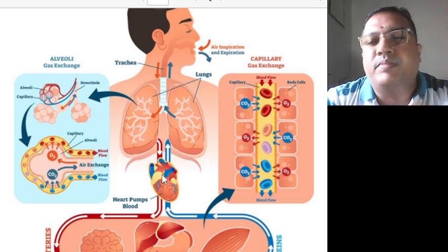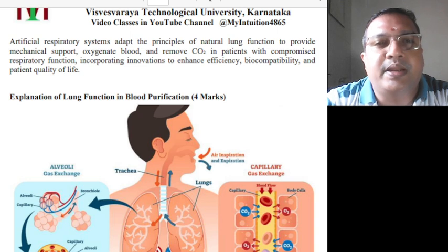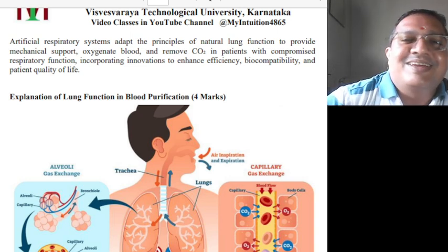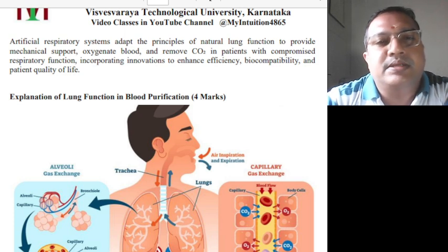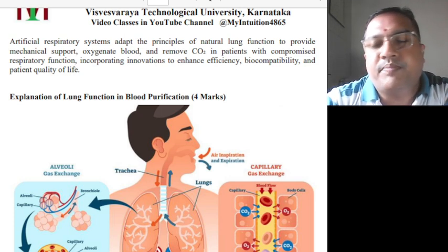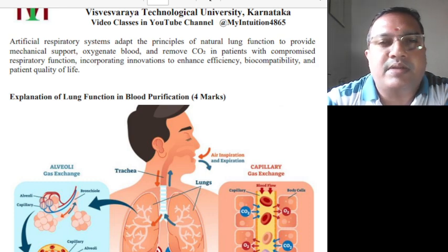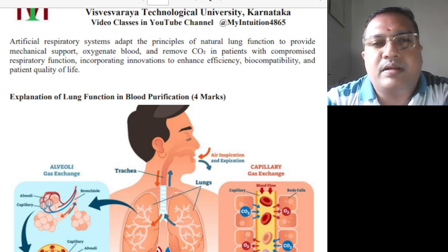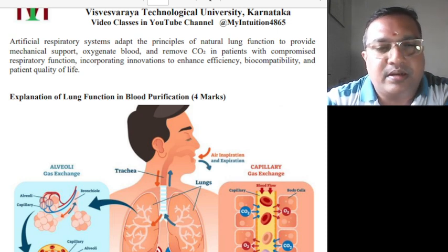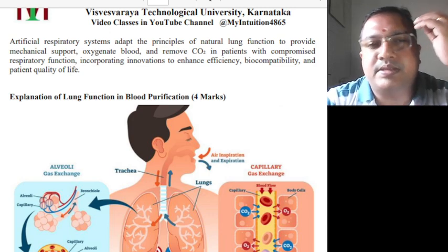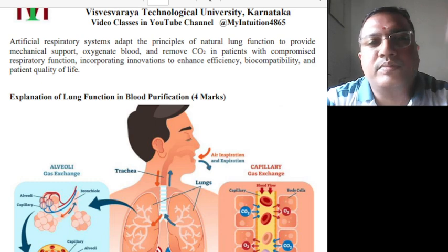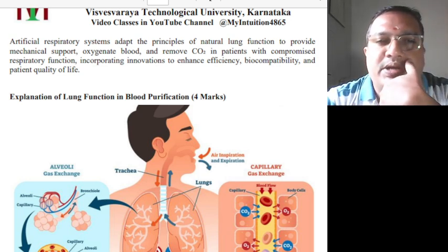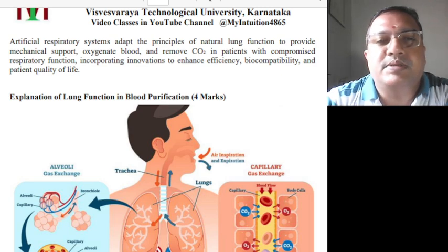Connecting to the information passed by the brain — everything is controlled by the brain, the CPU. Based on the brain's instruction, the lungs have to work. So an artificial lung also has to work accordingly, and it needs a lot of computing knowledge so that the signal which the brain gives can be decoded and converted so that the artificial part will do the work.